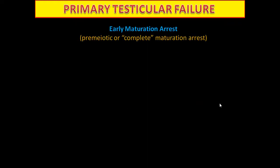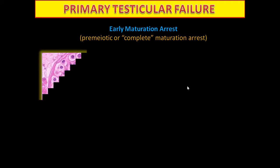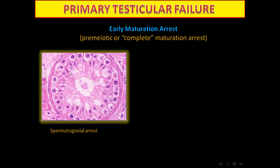Early maturation arrest, also called pre-meiotic or complete maturation arrest, includes spermatogonial arrest. You can find only spermatogonial cells — the spermatogonia — which are always in direct contact with the basement membrane. Sertoli cells are also present. The only spermatogenic cells seen are spermatogonia, so it is called spermatogonial arrest.